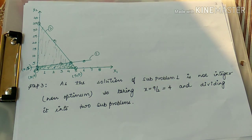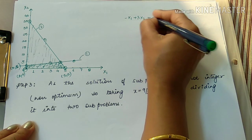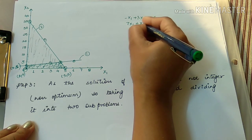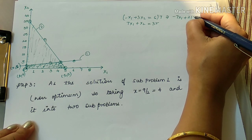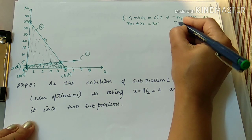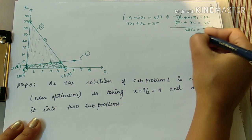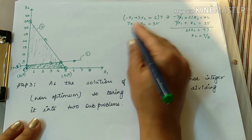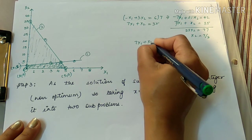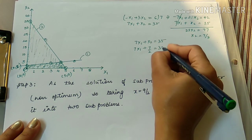Solving equations 1 and 2 simultaneously: equation 1 is minus x1 plus 3x2 equals 6; equation 2 is 7x1 plus x2 equals 35. Multiplying equation 1 by 7: minus 7x1 plus 21x2 equals 42. Adding to equation 2: 22x2 equals 77, so x2 equals 7/2.